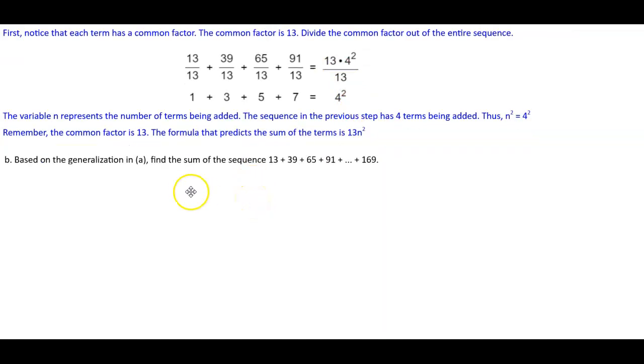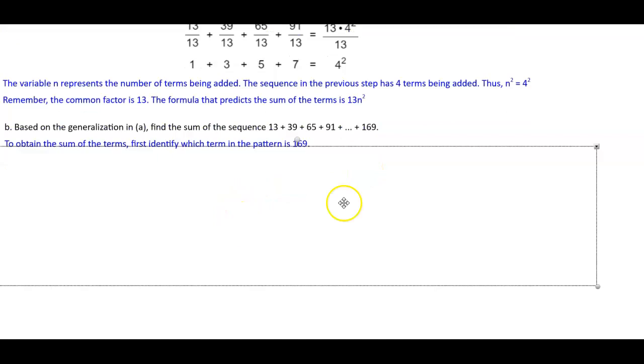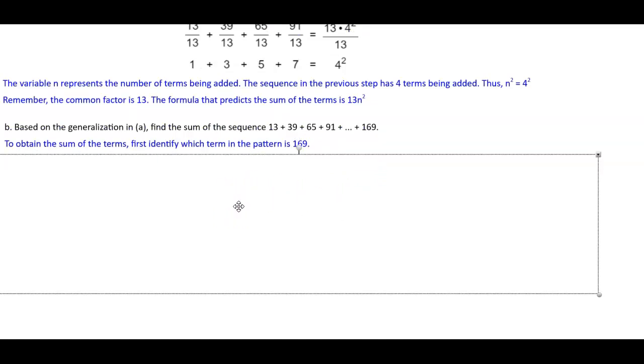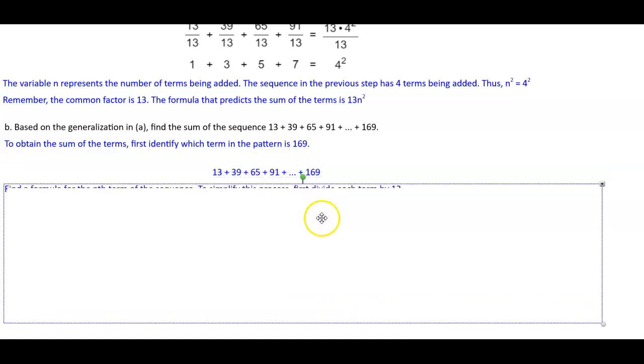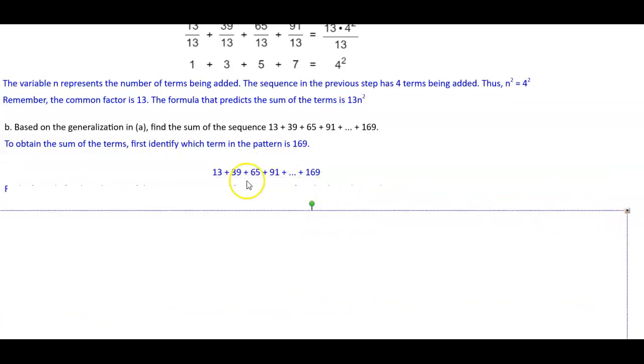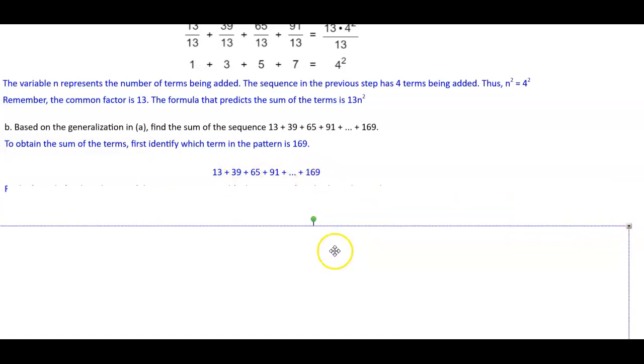Based on the generalization in A, we want to find the sum of the sequence 13 plus 39 plus 65 plus 91 all the way to plus 169. To obtain the sum of the terms, we need to first identify which term in the pattern is 169. If we write out the sequence, we can see the following.